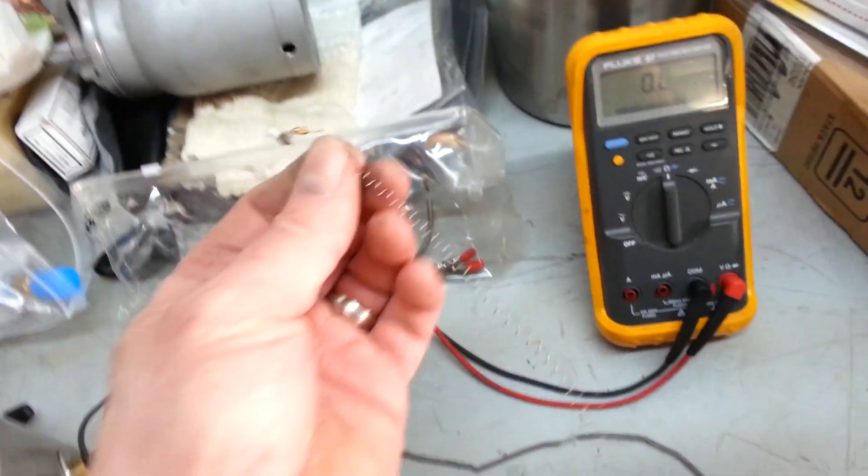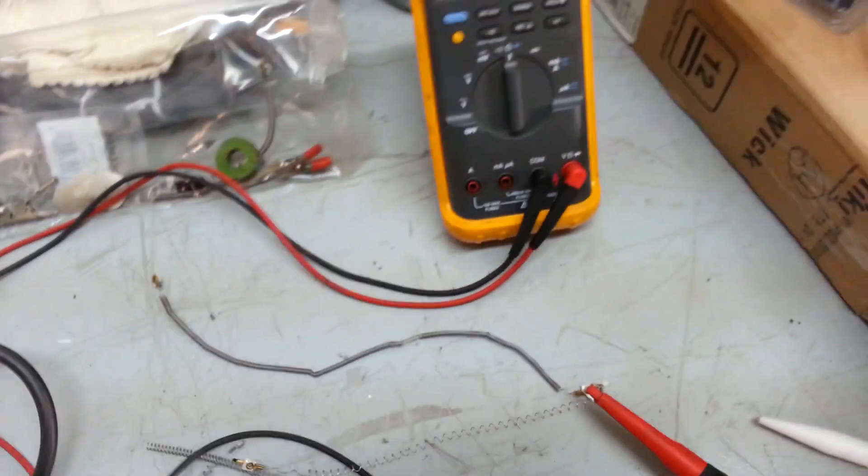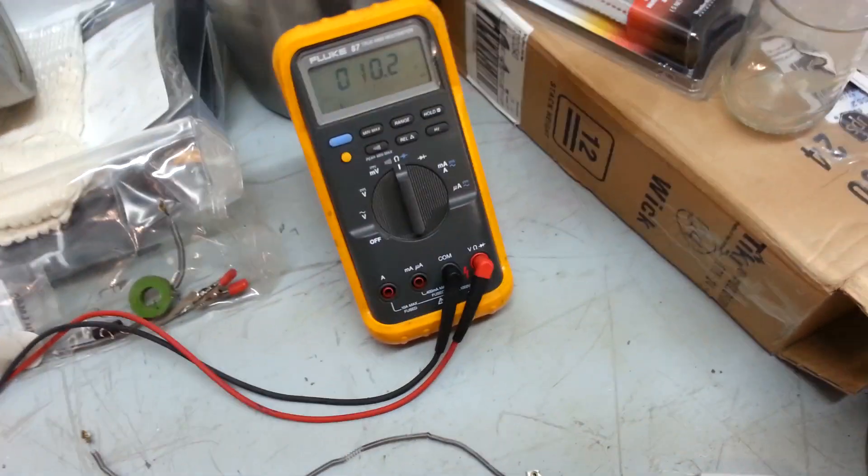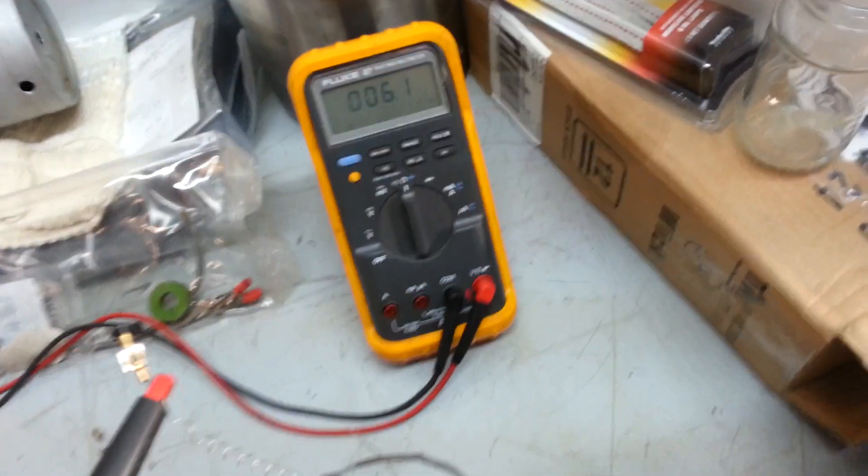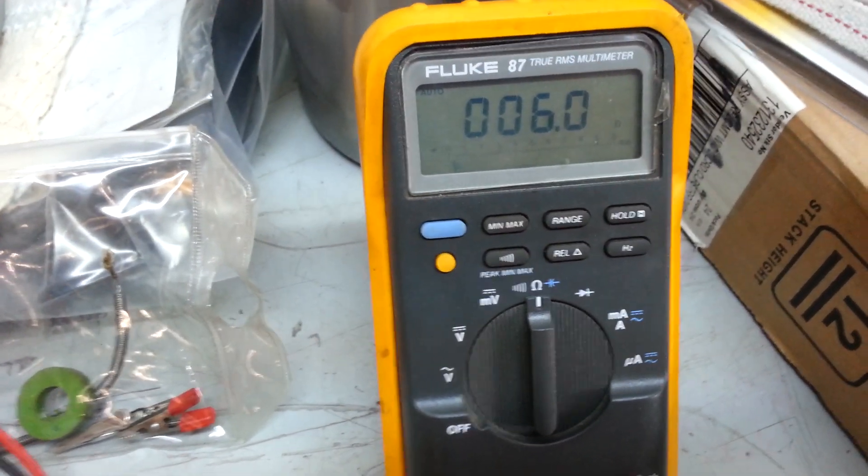For example, this one here is stretched out a little bit, and clip it on that end, and then clip the other end on there. All right, see, now we're at six ohms.